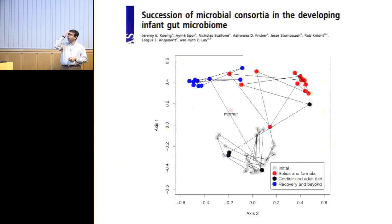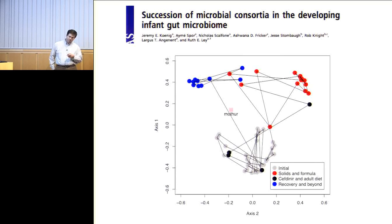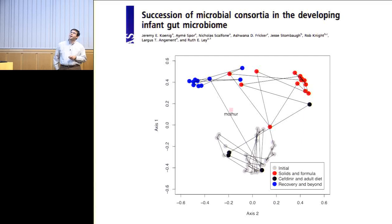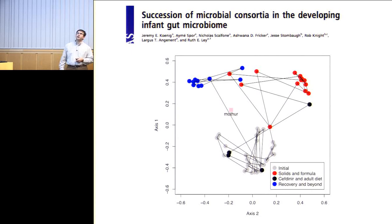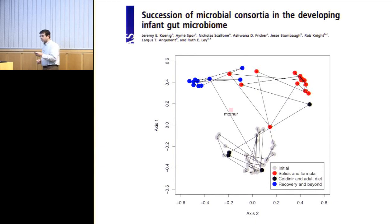Ruth Leigh was lucky enough to find a mom that would help get stool samples from a newborn infant and herself. What you see over the first three years of this kid's life are several stable states — various states that the kid's gut community experiences — with shifts in community structure as the kid goes on to solids and formula, uses antibiotics because of an ear infection, and then recovers and begins to consume an adult diet. If you're a parent with young kids you might worry, but I'd say we're all screwed up for life because there are all these little coincidences that have happened across our lives to shape our gut community.